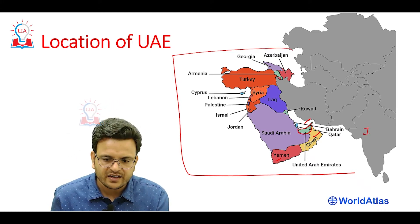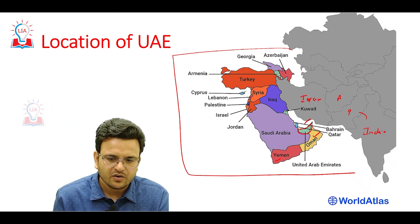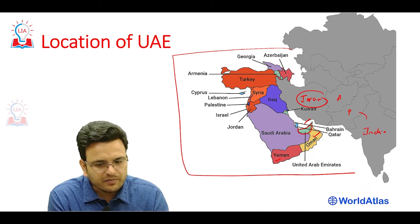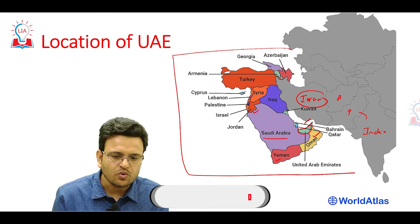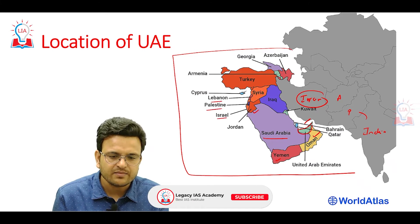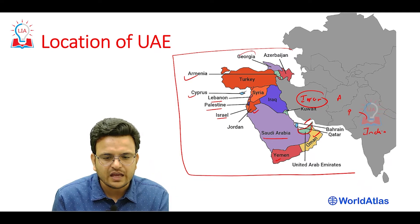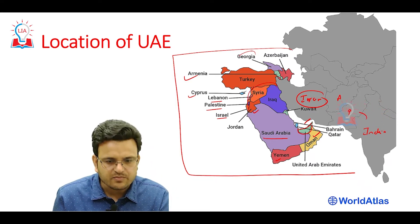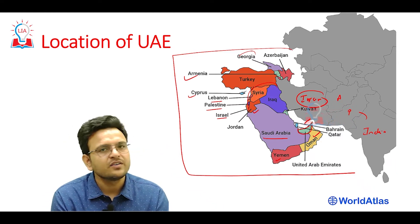Looking at the map, we have India, along with Pakistan, Afghanistan, Iran, and then Oman, Yemen, Saudi Arabia, Jordan, Israel, Palestine, Lebanon, Cyprus, Armenia, Turkey, Georgia, and Azerbaijan. Basically, these countries are more important to ensure energy security for India.